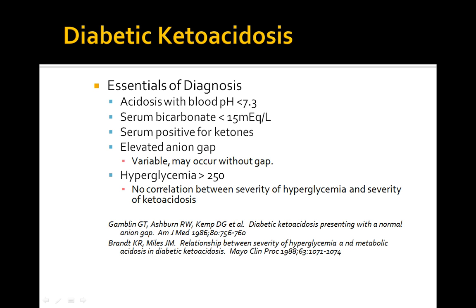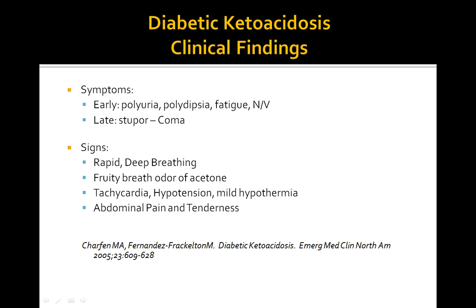Clinically, patients present with polyuria, polydipsia, and dehydration, which typically causes tachycardia, hypotension, dry mucous membranes, and decreased skin turgor. Patients also have nausea, vomiting, abdominal pain, and at times an ileus. Kussmaul's respirations — deep, rapid breathing to compensate for the metabolic acidosis — are a key finding in DKA, along with the characteristic odor of acetone on physical exam.